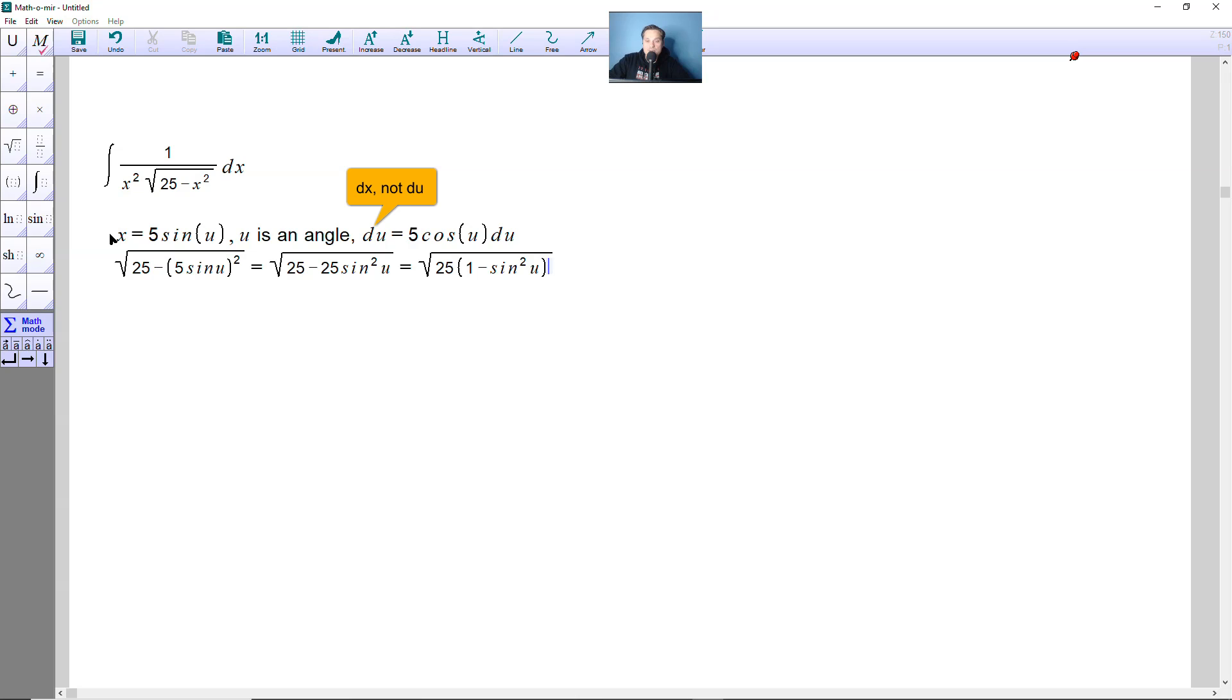Lastly, you can replace 1 minus sine squared u with cosine squared because it's equivalent to it by basic trig. So that means over here now this would become the following 25 cosine squared u and then you simplify this into 5 cosine u.